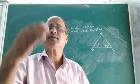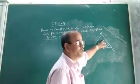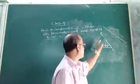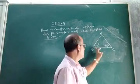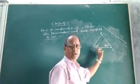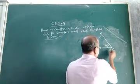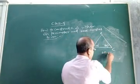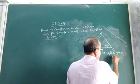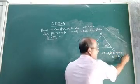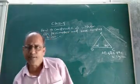Let me explain the steps with the help of an example. Suppose we want to construct triangle ABC whose two base angles are angle B = 45 degrees, angle C = 60 degrees, and the perimeter AB + BC + AC = 14 cm. Now, how to construct the triangle?